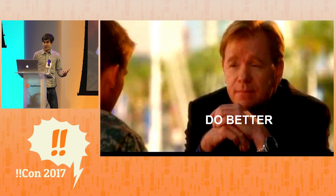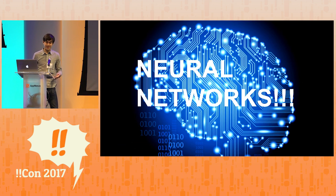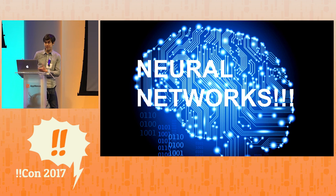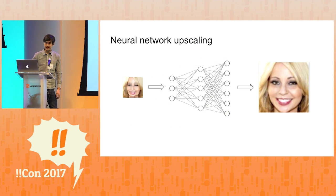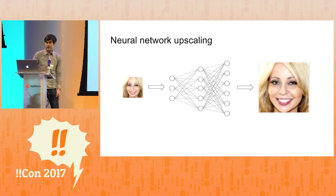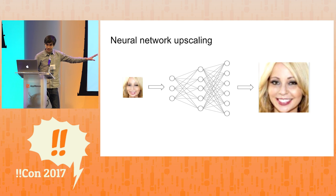All right, so it's 2017. We have other things we can try, like maybe a neural network. So what is a neural network? All a neural network is is a function that takes some sort of input and turns it into some sort of output, except instead of actually writing the code for the function, we just train the function based on a bunch of examples. So in this case, what we want is a neural network that takes this low-resolution photo and turns it into the high-resolution version of the same photo.